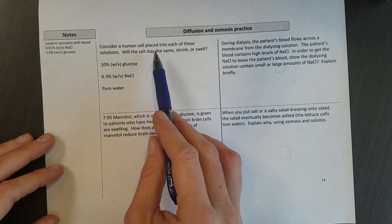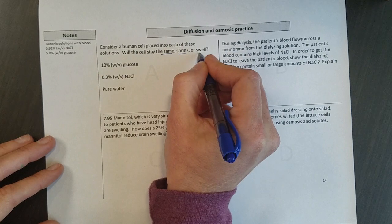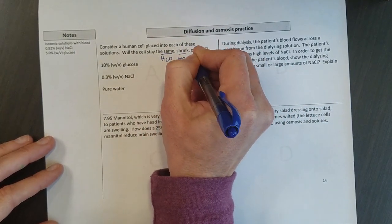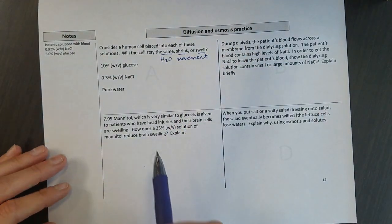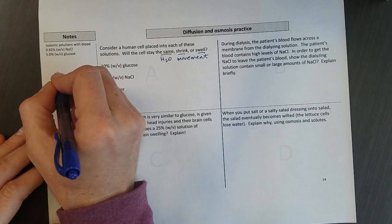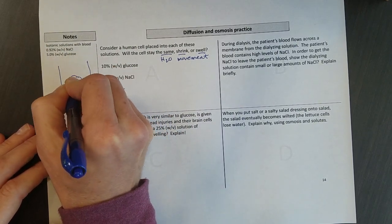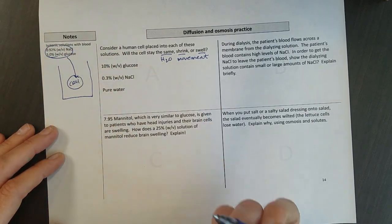So consider a human cell placed in each of these solutions. Will the cell stay the same, shrink, or swell? And you might want to talk about the movement of water also. So where is osmosis happening? So if I compare a cell, this would be my kind of picture here. If I have a cell, and these are the solutions that are inside of the cell.